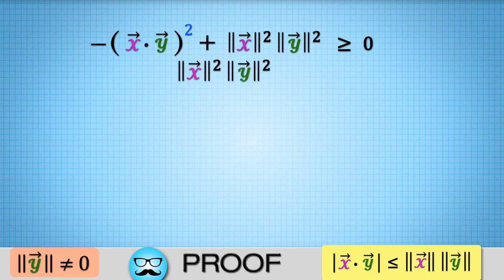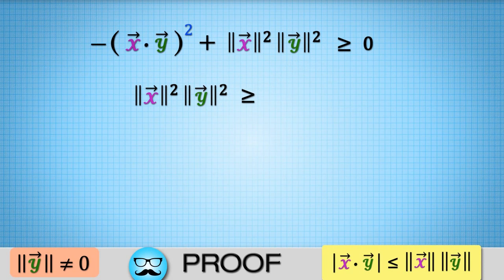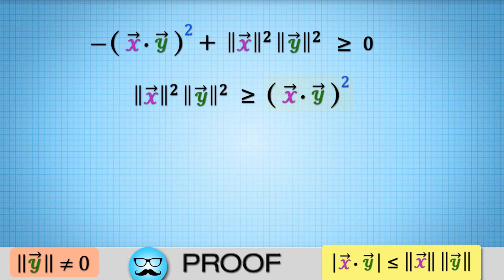Multiplying both sides by norm of y squared and moving terms to the other side, we get the norm of y squared norm of x squared is greater than or equal to x dot y squared.